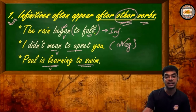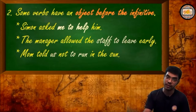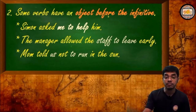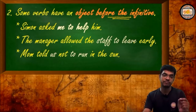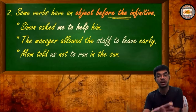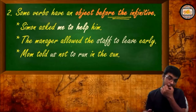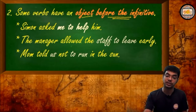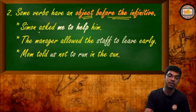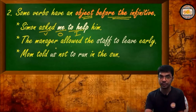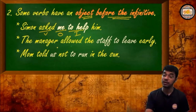The next rule says some verbs have an object before the infinitive. In the previous rule we placed the infinitive right after the verb, but here the infinitive and the verb are parted — parted by an object. Like this one: 'Simon asked me to help.' Here 'asked' is the verb, 'me' is the object, and 'to help' is the infinitive. So an infinitive may appear right after the object of a verb.